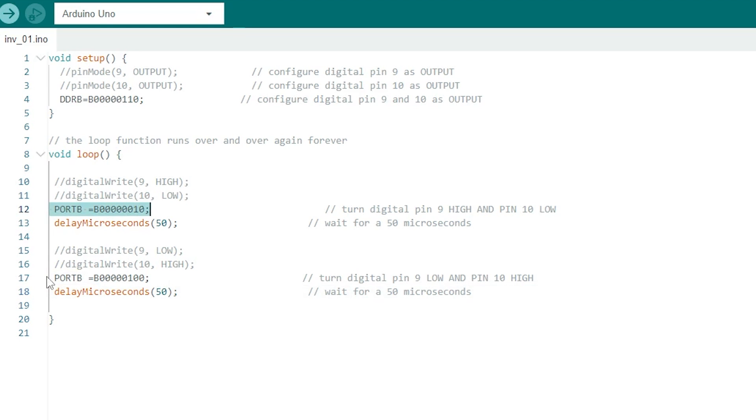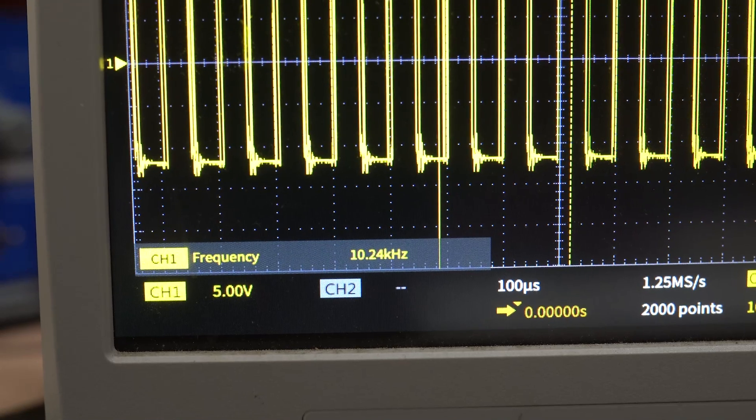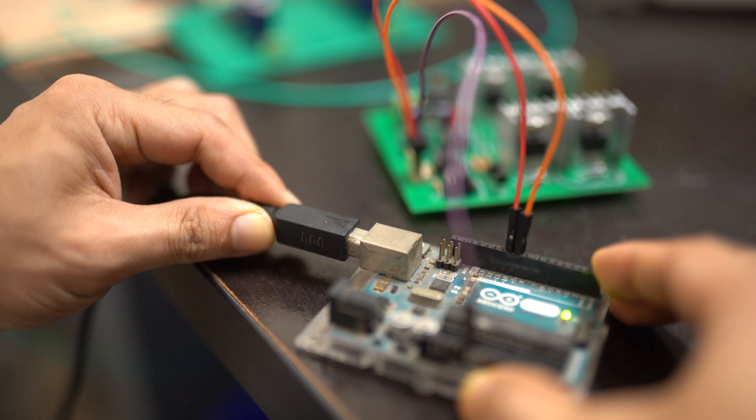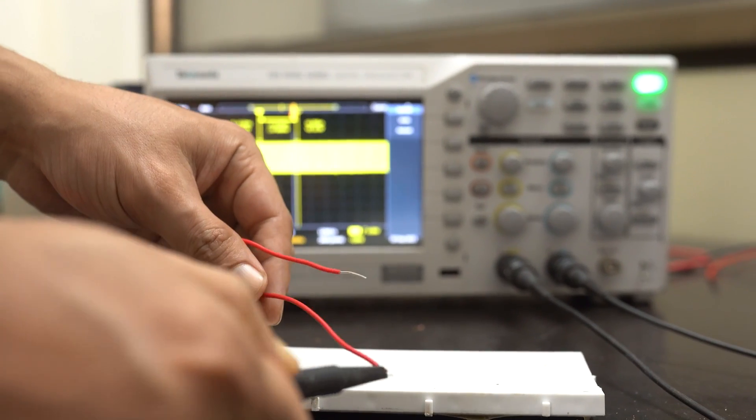Next, we give a delay of 50 microseconds which gives us an output of 10 kilohertz. You can also change the value of the delay to change the output frequency. This statement sets digital pin 9 as low and digital pin 10 as high. After the program upload is complete, connect the oscilloscope probe to the output terminals of the module and observe the output on the oscilloscope.